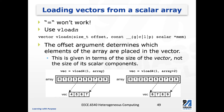The first argument, offset, determines which elements of the array are placed in the vector. It is given in terms of the size of the vector, not the size of its scalar components.